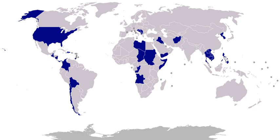1973, Operation Nickel Grass: a strategic airlift operation conducted by the United States to deliver weapons and supplies to Israel during the Yom Kippur War. 1974, Evacuation from Cyprus: United States naval forces evacuated U.S. civilians during the Turkish invasion of Cyprus. 1975, Evacuation from Vietnam, Operation Frequent Wind: on April 3, 1975, President Ford reported U.S. naval vessels, helicopters, and Marines had been sent to assist in evacuation of refugees and U.S. nationals from Vietnam. 1975, Evacuation from Cambodia, Operation Eagle Pull: on April 12, 1975, President Ford reported that he had ordered U.S. military forces to proceed with the planned evacuation of U.S. citizens from Cambodia.